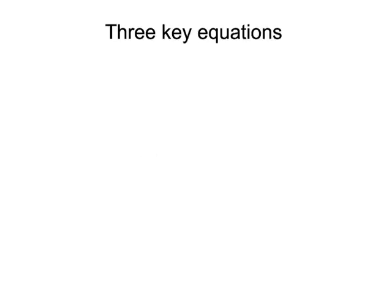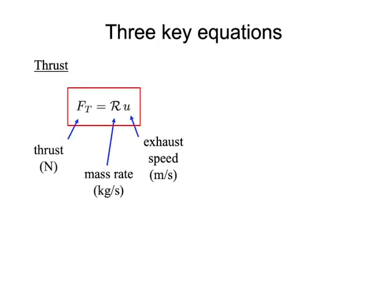The first equation is the thrust equation. It tells us that thrust in Newtons equals the mass rate — the rate at which propellant is expelled from the rocket motor in kilograms per second — times the exhaust speed in meters per second. The more fuel you expel, or the faster you expel it, the greater the thrust.